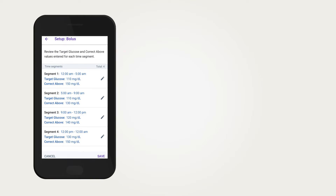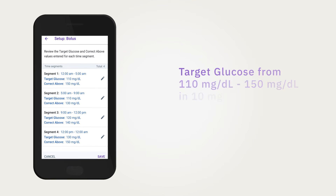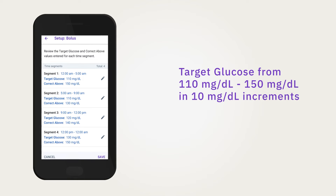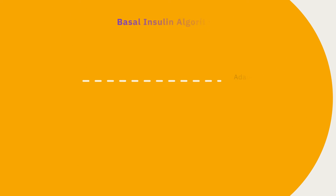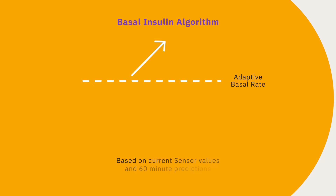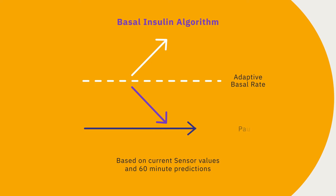Target glucose values are customizable based on your daily needs, ranging from 110 to 150 milligrams per deciliter. When the system is in automated mode, you can expect to see times when insulin delivery is increased, decreased, or paused in response to changes in your sensor values.